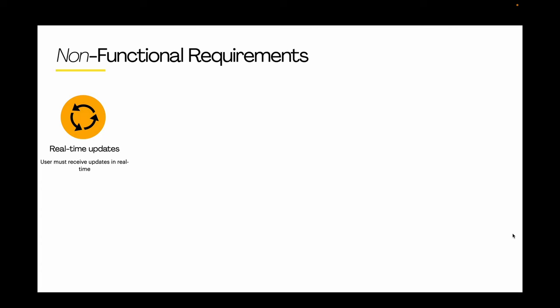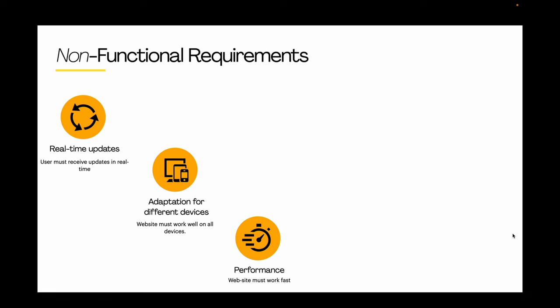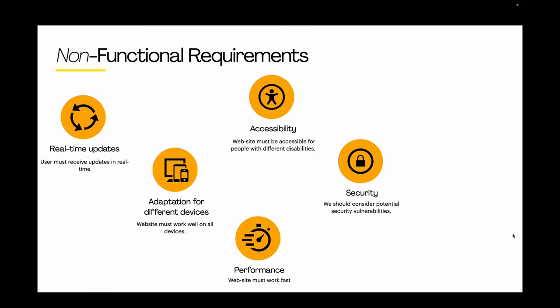Next, let's look at non-functional requirements. The first is real-time updates. In our case, real-time updates are important but not critical. Adaptation for different devices – the website should work seamlessly on different devices with varying screen sizes. Performance – the application must work fast and smoothly. Accessibility – the website must be accessible to people with different disabilities. We should consider potential security vulnerabilities. And localization – the website must support different languages.